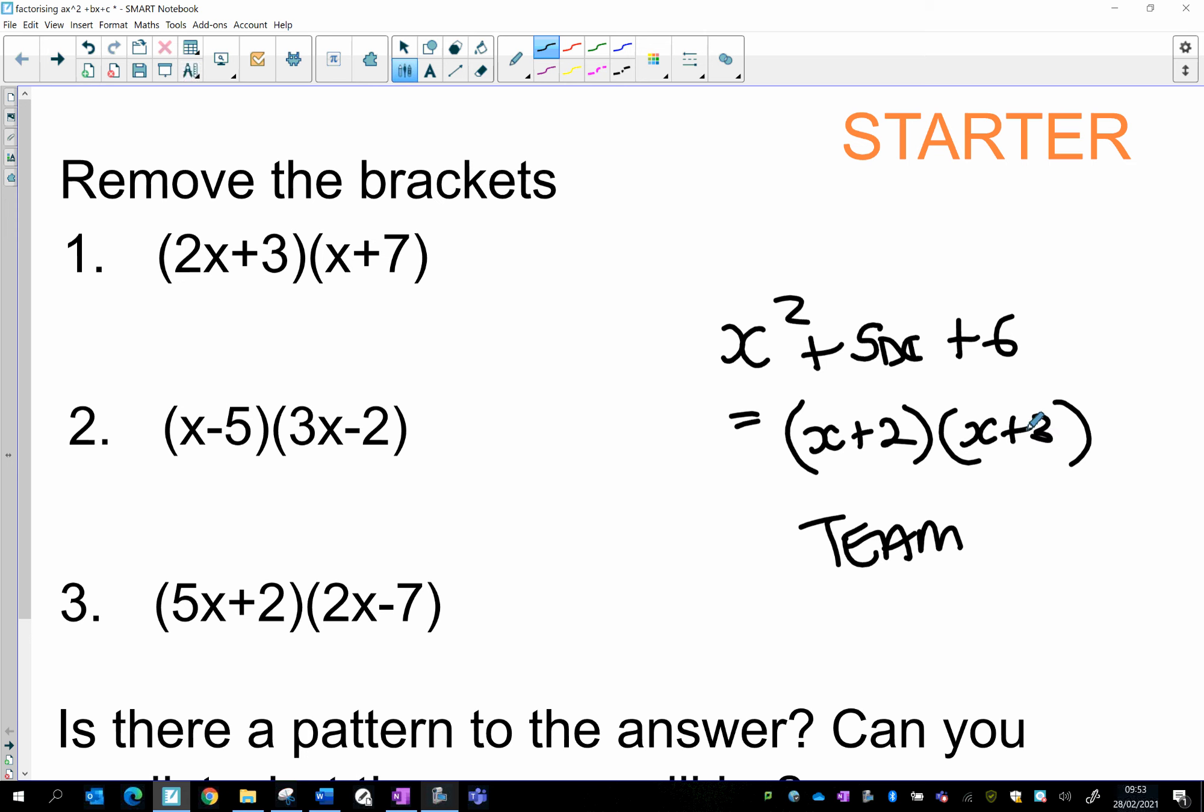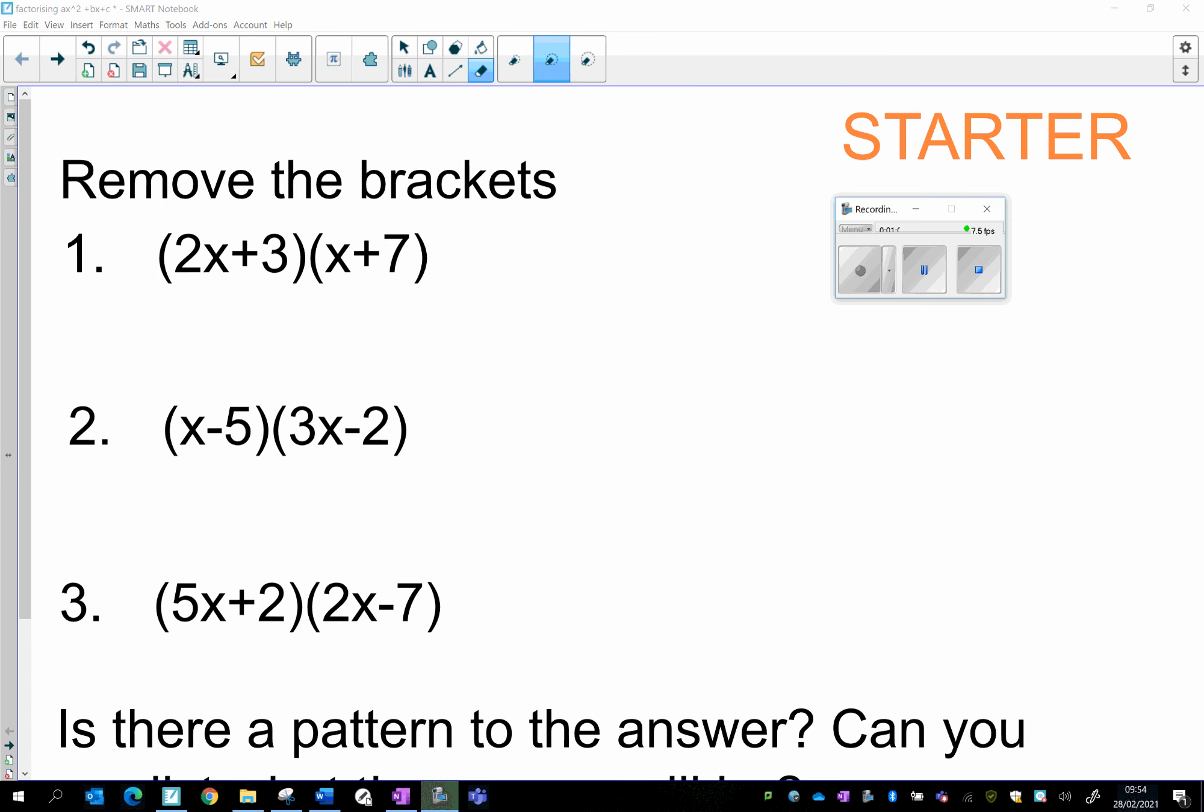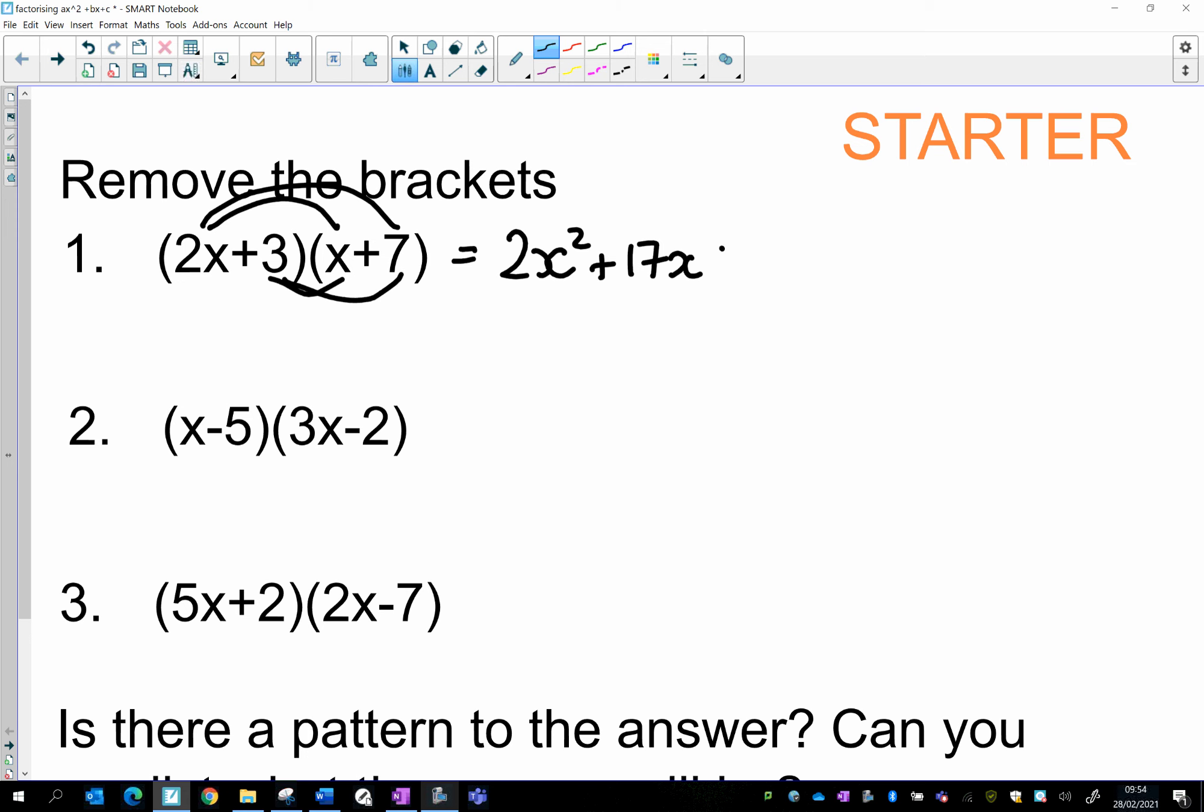It's a completely different story when you're trying to factorise something where instead of just x squared at the beginning you've got something like 2x squared plus something or 3x squared plus something. If the number of x squared is not just 1, then the method that we use is completely different. And you can see that that's the case here when we try and remove some brackets. So let's remove the brackets here using crab claw. So we do 2x times 3. 2x times 3, that's going to be 2x squared. Then you've got the outer, so that's 14x plus 3x, well that's 17x. And then 3 times 7 is 21.